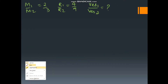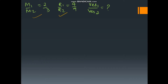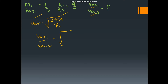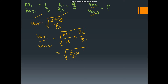Now let us work out a numerical. Mass and radius are given and they are asking for the ratio of escape velocities. We know v_escape = √(2GM/r), so v_escape1 / v_escape2 = √(m1/m2) × √(r2/r1). The mass ratio is 2:3 and radius ratio is 9:4, which simplifies to give the ratio as √(3/2). So escape velocity 1 divided by escape velocity 2 is √(3/2).